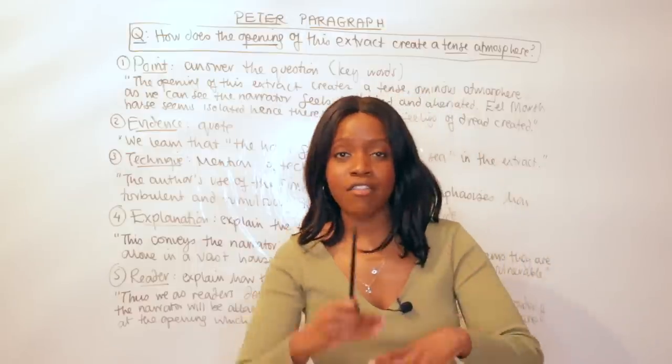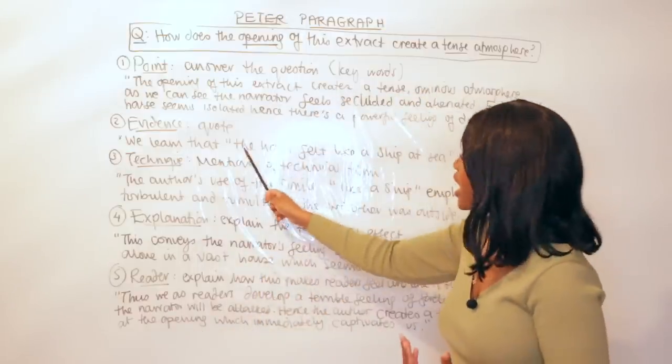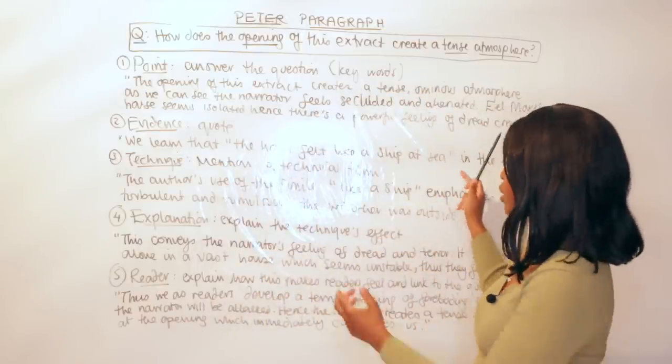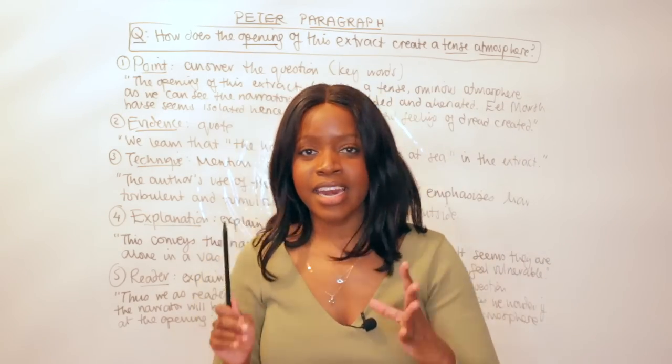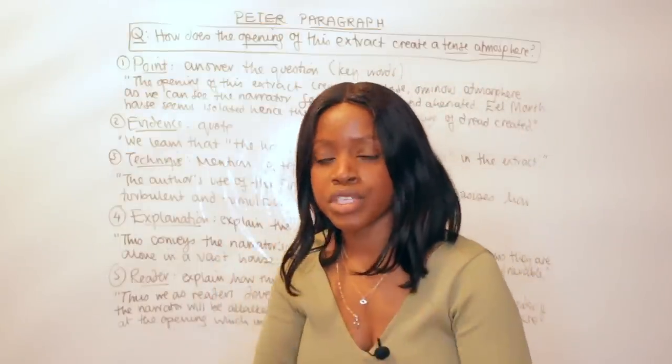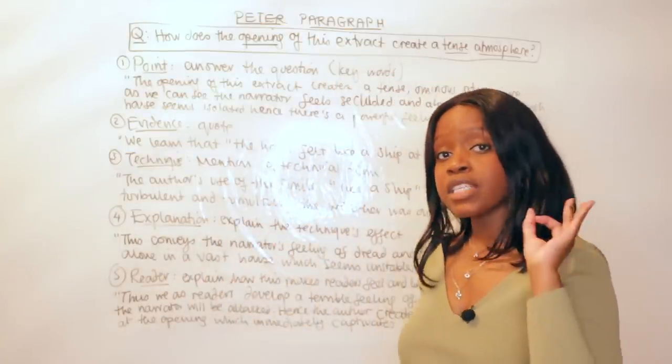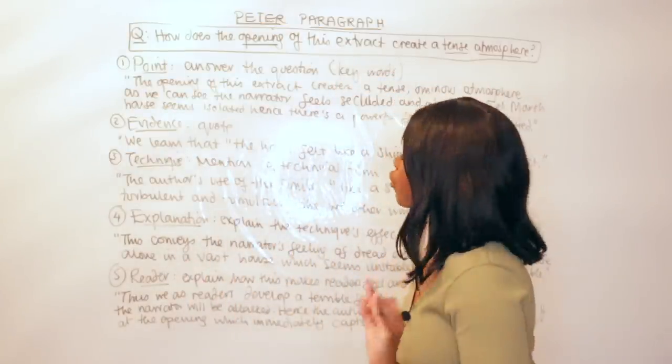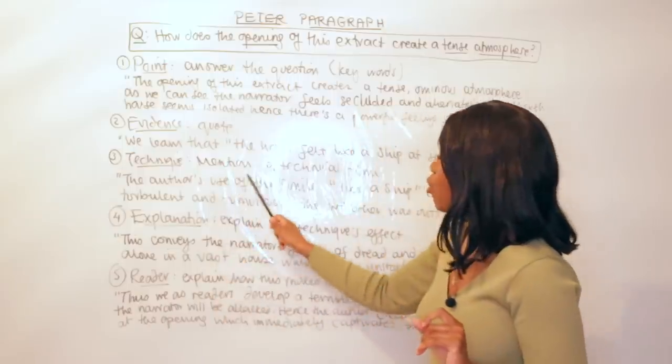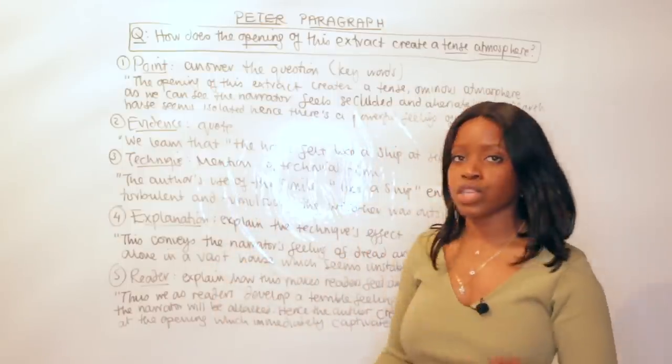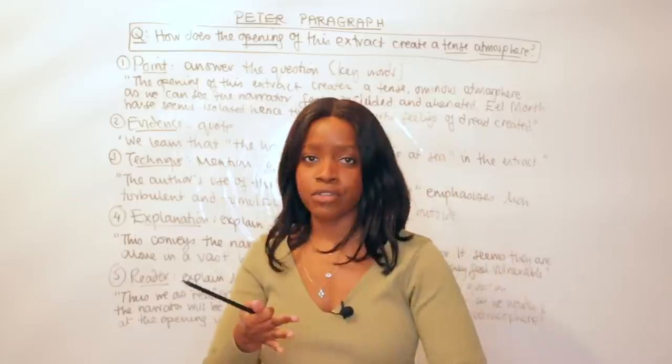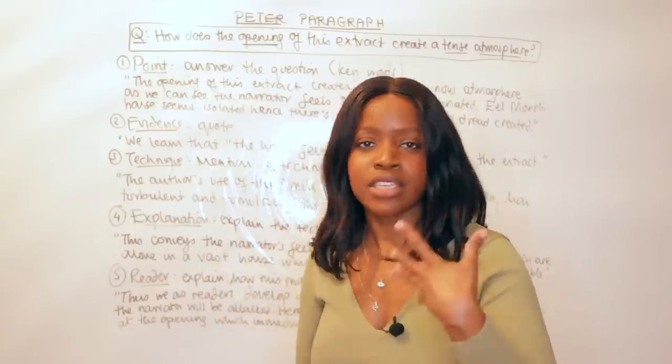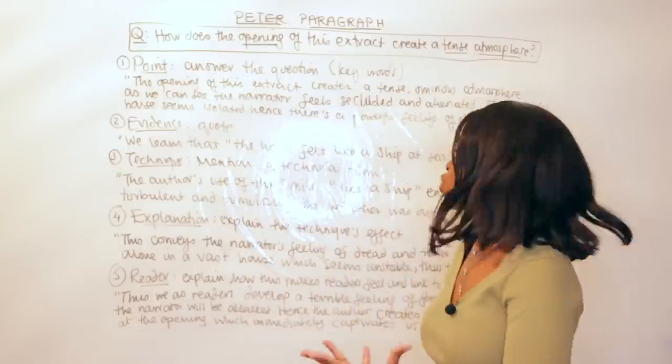Now let's look at my quotation: We learned that 'the house felt like a ship at sea' in the extract. So as you can see here, I have embedded my quotation, which is 'the house felt like a ship at sea.' So I've embedded this quotation within my Evidence. Again, as I mentioned, Evidence is you supporting your opening Point. Now let's look at the T in my PETA paragraph. T, as I mentioned, stands for Technique. And what this means is you need to mention a technical term. Does the writer use a really interesting form of alliteration, simile, metaphor, even sentence type? Do they use an interesting simple sentence, compound, complex, declarative, and so on?